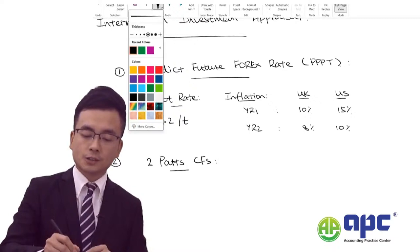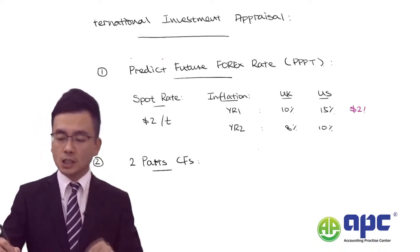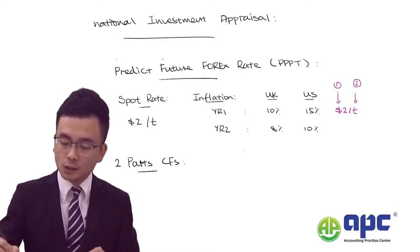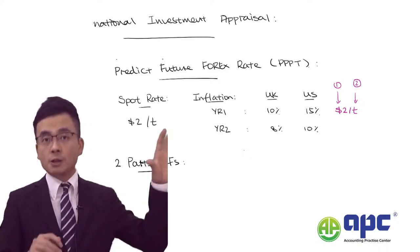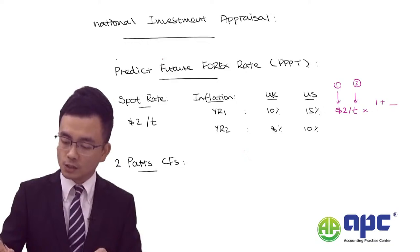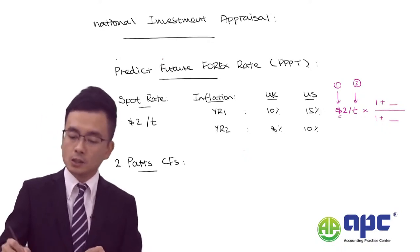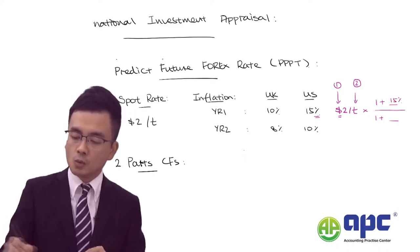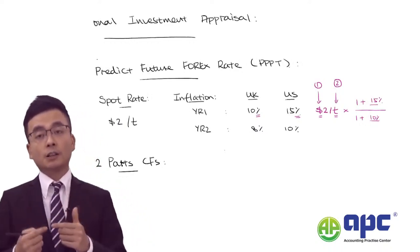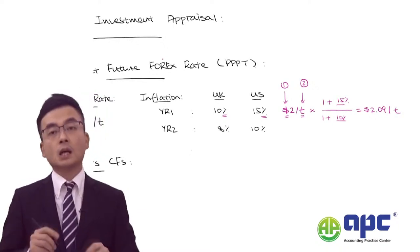To predict the future exchange rate: take the spot rate of $2/£ and multiply by (1 plus the first currency inflation) divided by (1 plus the second currency inflation). For year one: 2 times 1.15 divided by 1.1 equals approximately $2.09/£. Carry this forward to year two: 2.09 times 1.10 divided by 1.08 equals approximately $2.13/£. This is how we predict the future exchange rate.